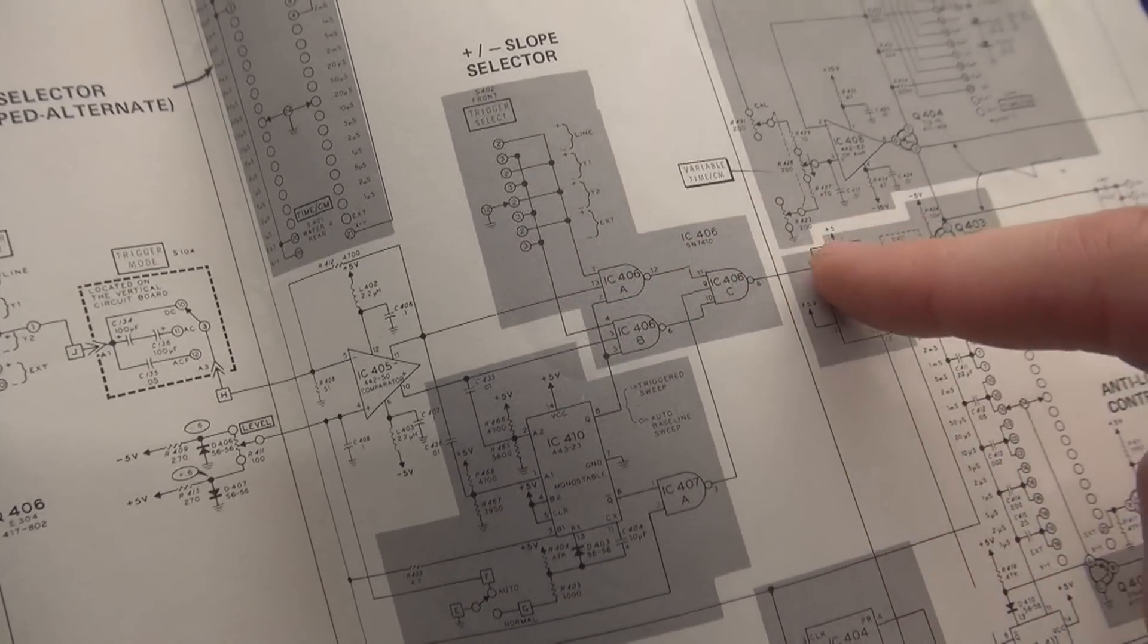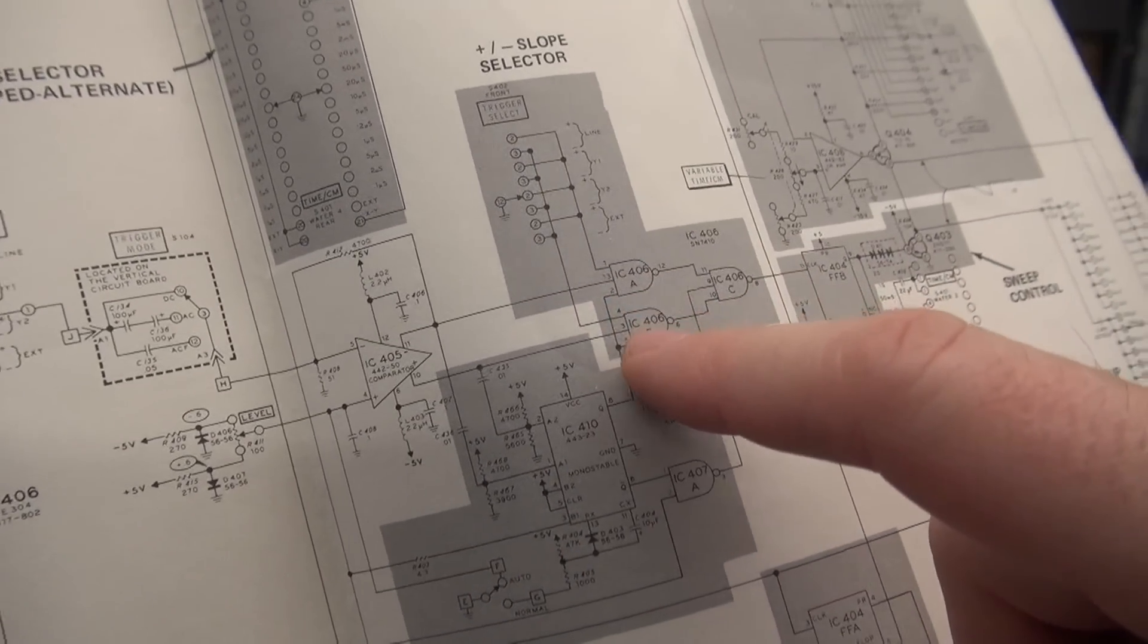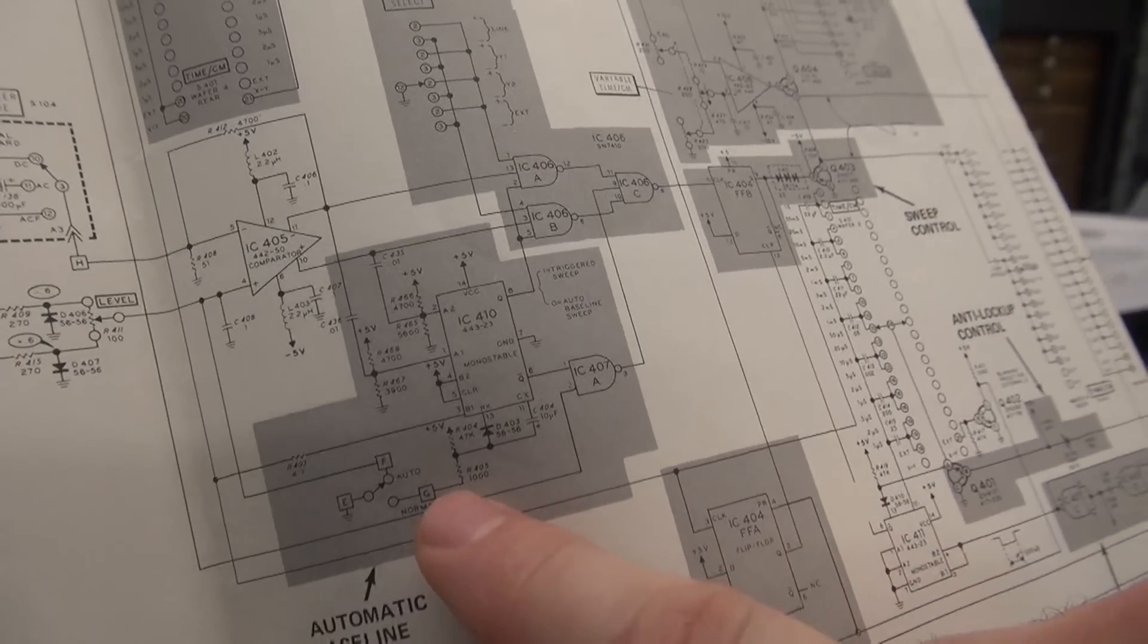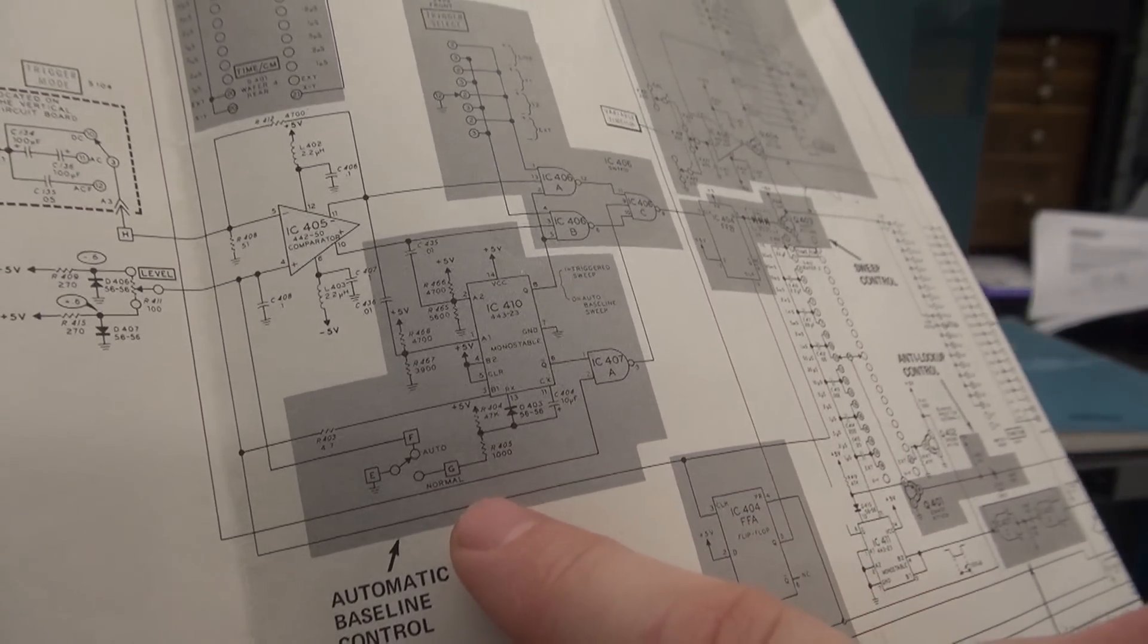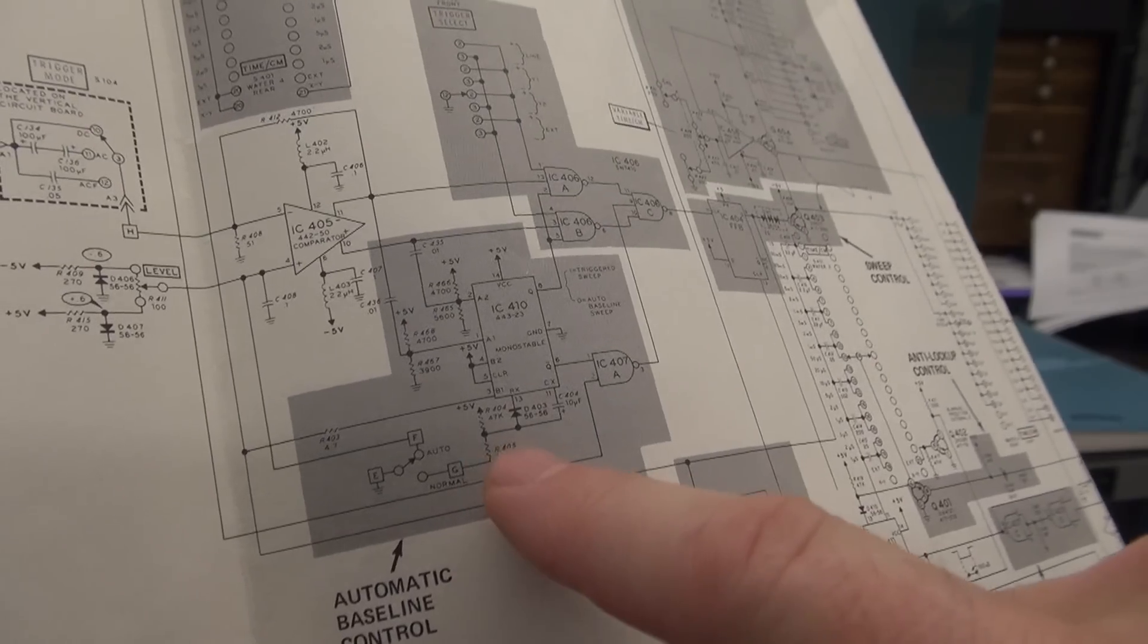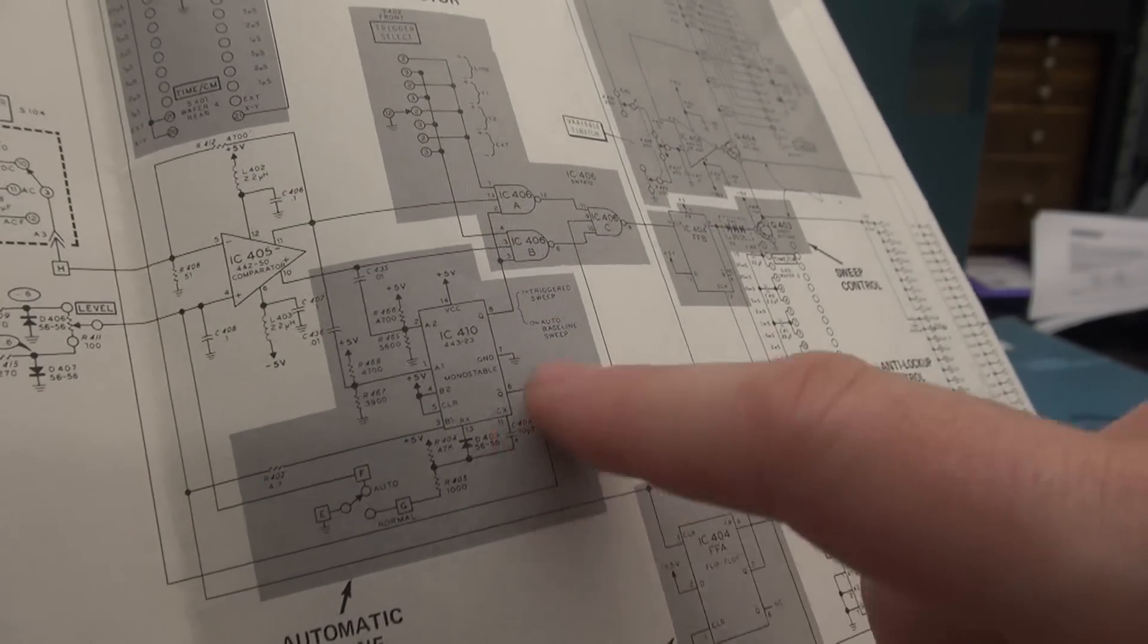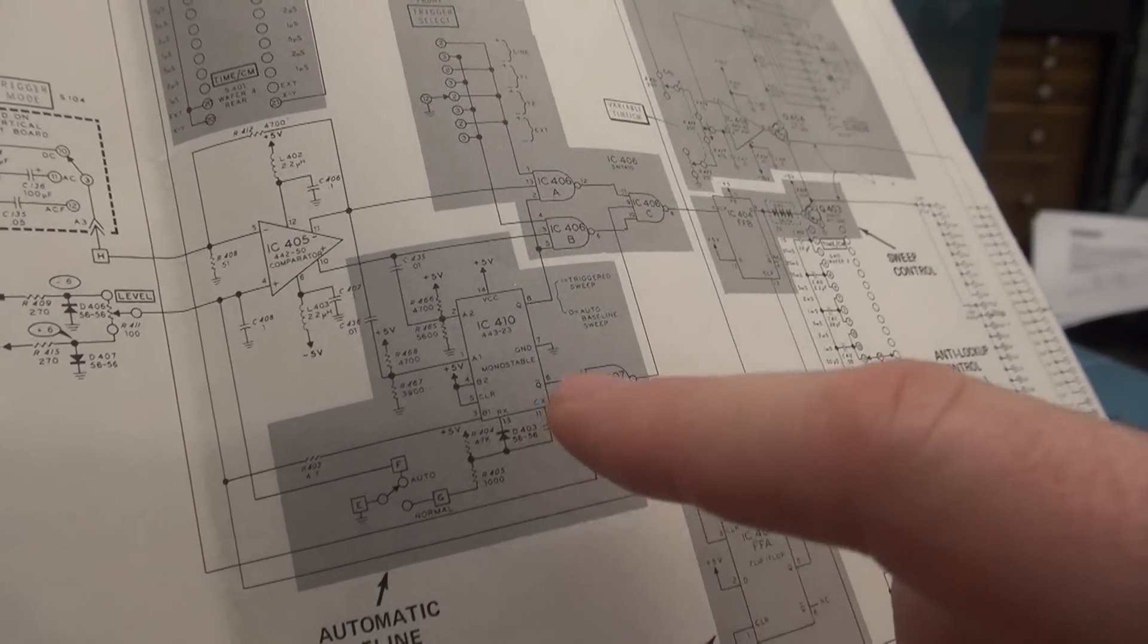So that is not working. It's not getting that signal. Something's interrupting it. And then if you look closer, you can see the auto and normal trigger switch. So when you go to auto, it actually bypasses IC405. These other chips do stuff and make it auto lock, and that's not quite working right either.